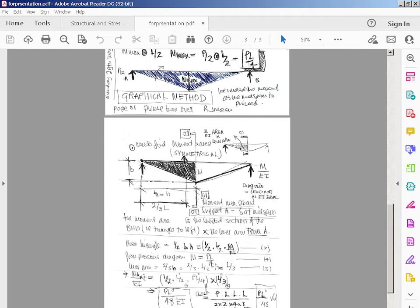That's PL squared over 16 EI - that's the area of the triangle. Now we just multiply that by the centroid distance. The centroid of the triangle is two-thirds of the height, so two-thirds of L is the lever arm.